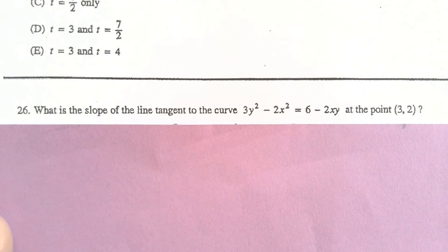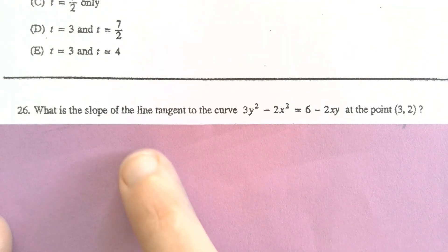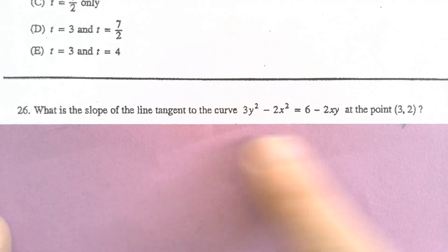For our last example, we're combining tangent lines and then also implicit differentiation. So I do want you to go ahead and pause the video and see if you can find the slope of the tangent line to this curve at the point 3, 2.